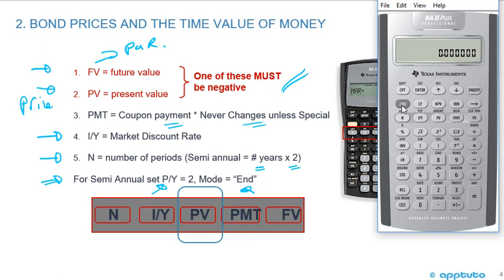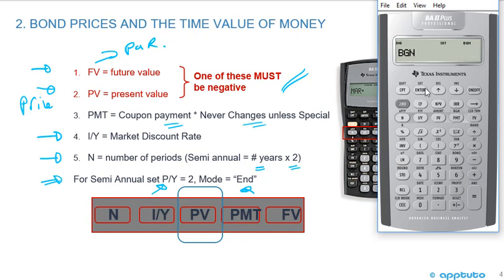Always double-check your calculator mode. For example, if you were left in beginning mode from a prior question, go to 2nd BGN, 2nd Enter to exit it. For bonds, if it's semi-annual, set periods per year to two and the mode to end mode. The keys used are: N, I/Y, PV (price), PMT (coupon), and FV (par value).